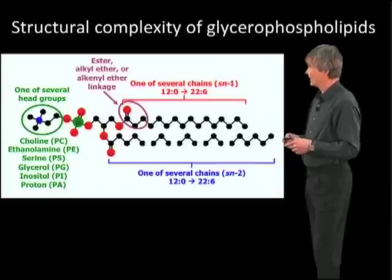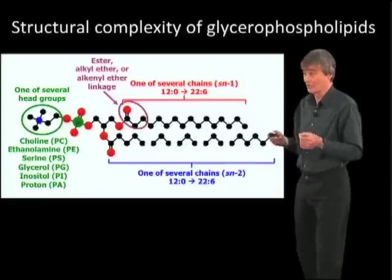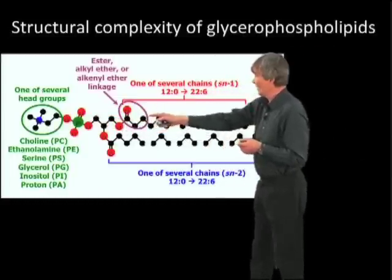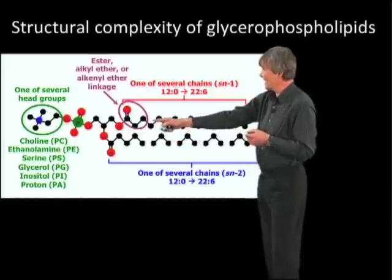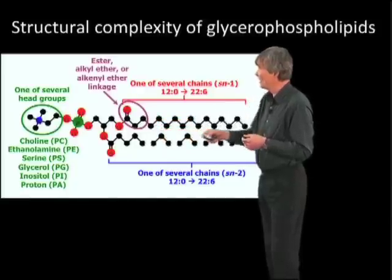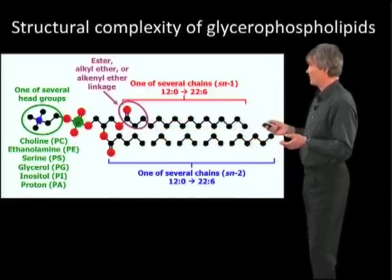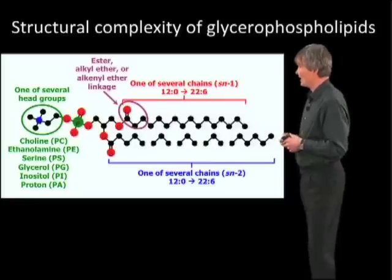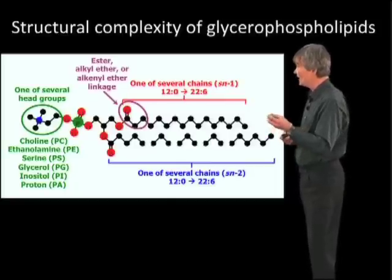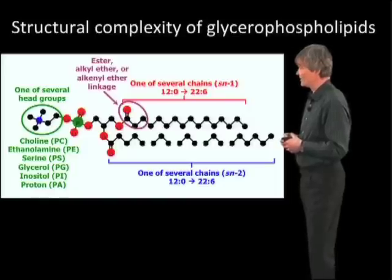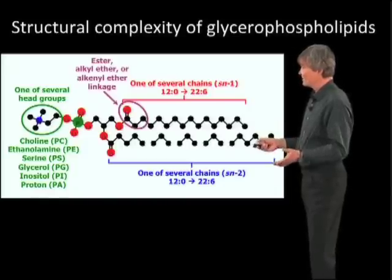Looking at this complexity, we see that there are several head groups. There are fatty acids in the SN1 and SN2 position — they are of different length, they have different numbers of double bonds, and they can also be linked to the glycerol with ester, alkyl ether, or alkenyl ether linkages. This makes for the whole complexity.